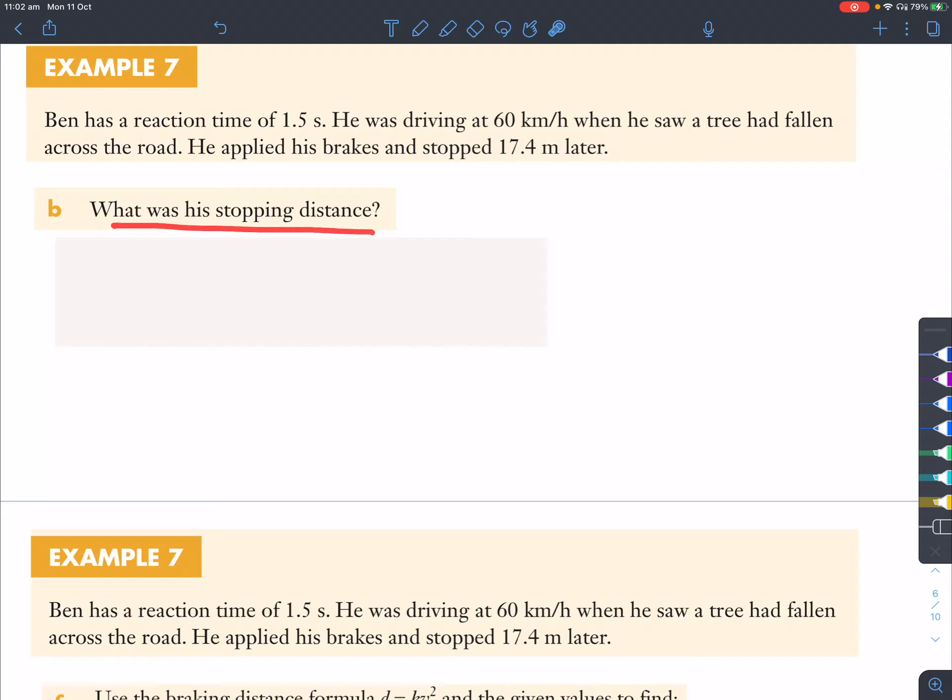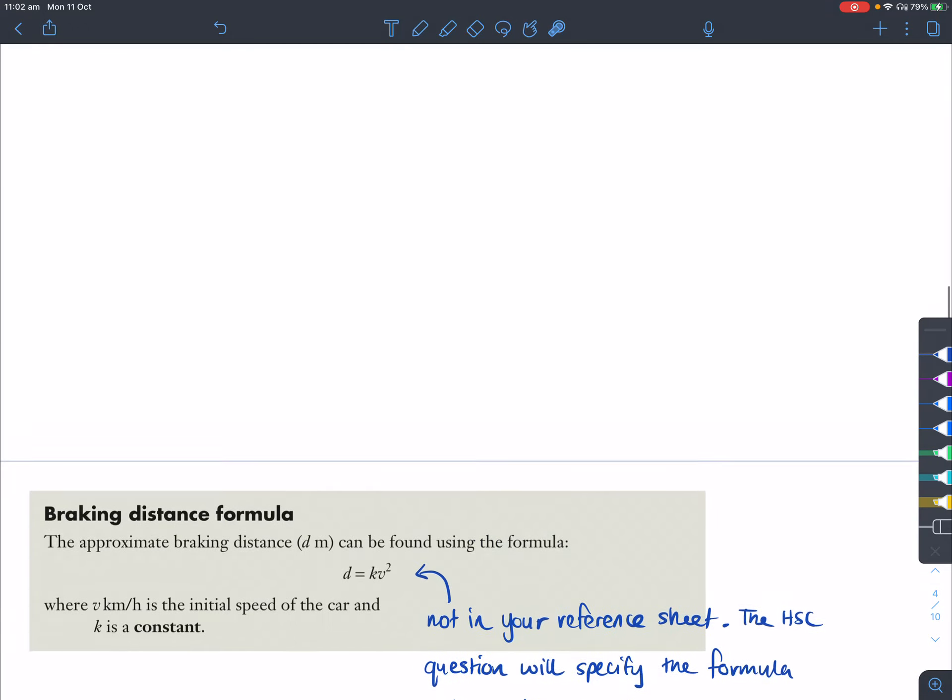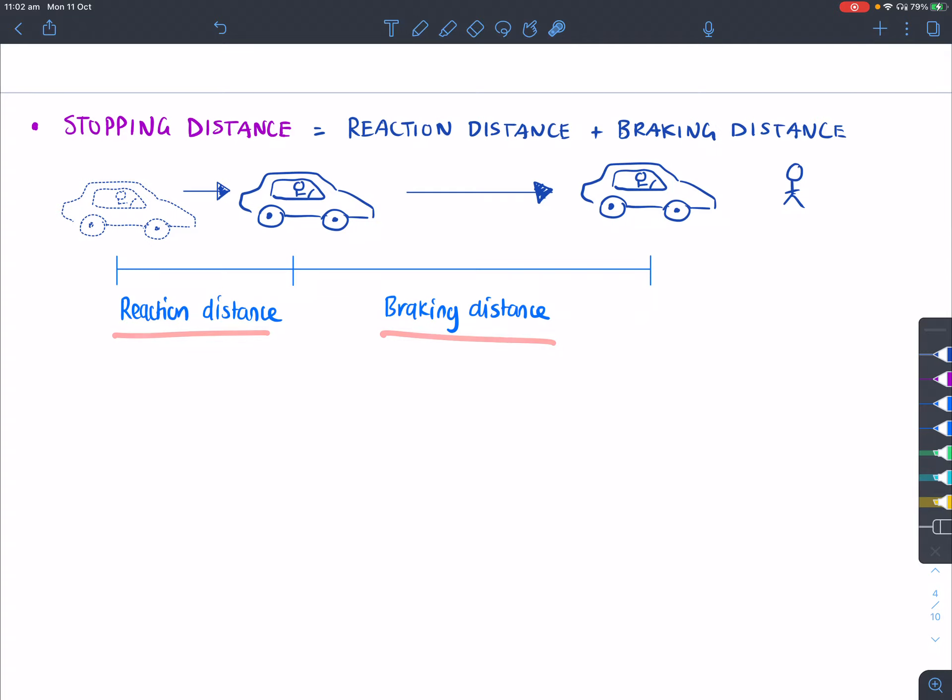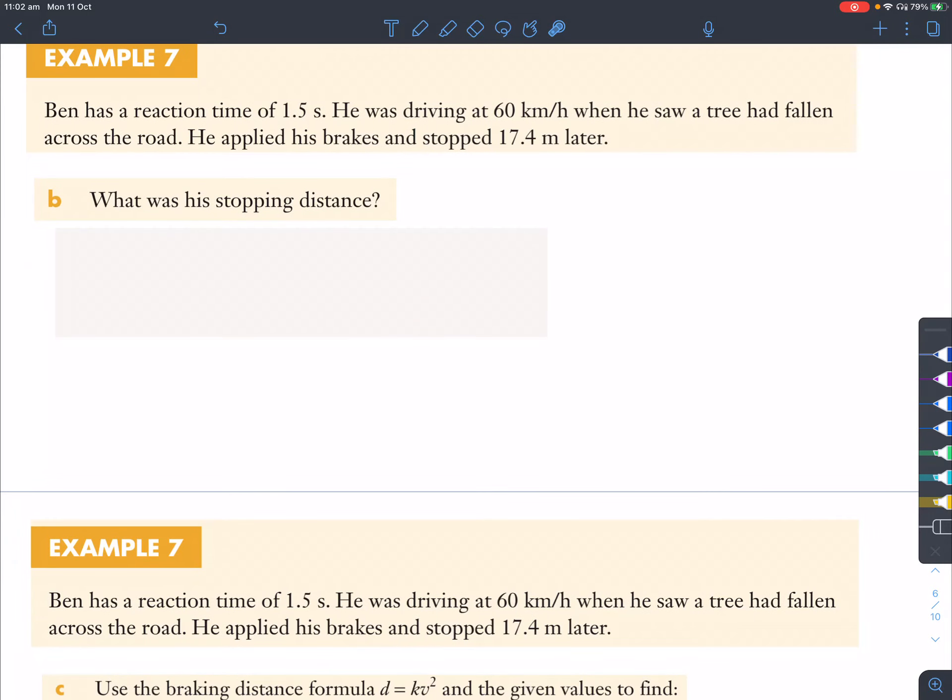Now, part B, what was his stopping distance? So, stopping distance refers to the time when he saw that tree fall to when he stopped. So, stopping distance, remember, is a combination of, let's have a look back at the notes, reaction distance and braking distance. So, we just found out reaction distance, which was 25 meters. So, now, if we look back at the information there, our braking distance here, which is the distance from when he first put his foot on the brakes to when he stopped, was this amount here. So, it took the car 17.4 meters ahead until he finally went to a stop, and that was it.